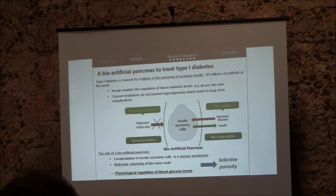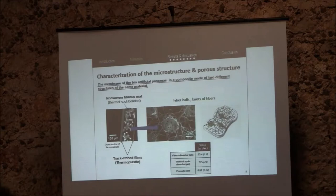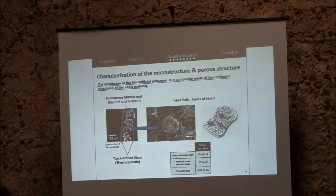What would happen if this bio-artificial pancreas breaks? There is a big problem for the patient because all the insulin would be released into the body, which can lead to death. So it's very important to control the selective porosity and the integrity of this membrane. We spent three years characterizing the mechanical properties of this bio-artificial pancreas to know how long it would last in the body — four or five years — and under what aging conditions, in vivo or not, it would crack.